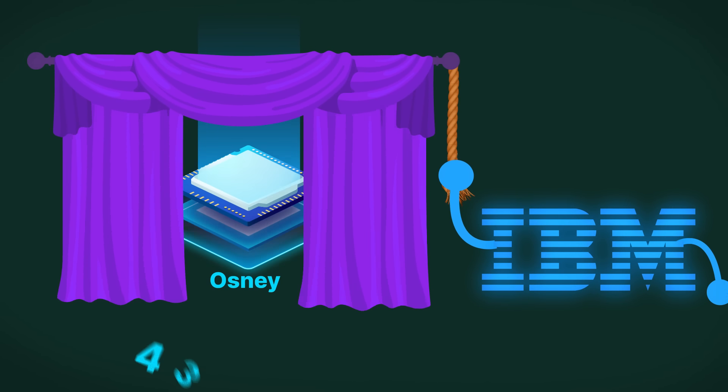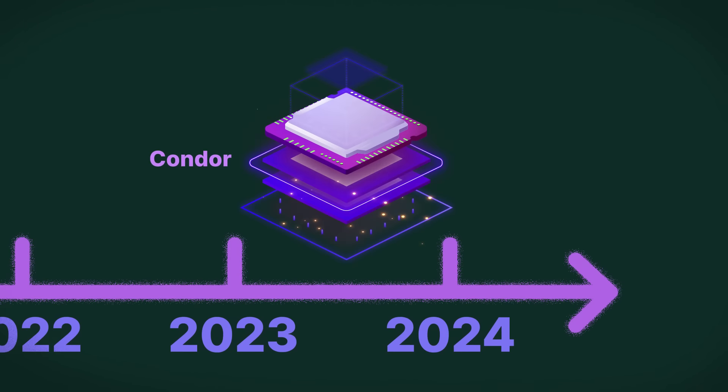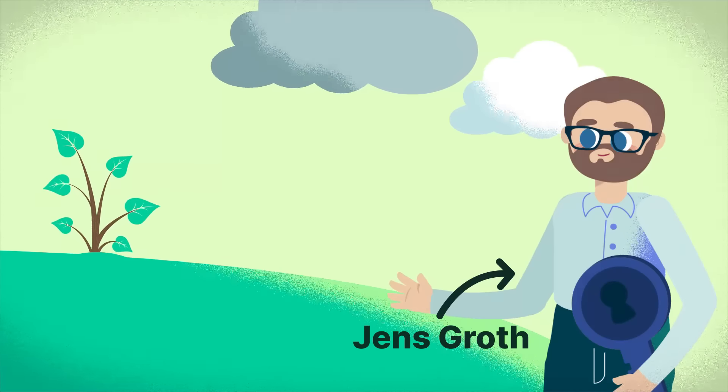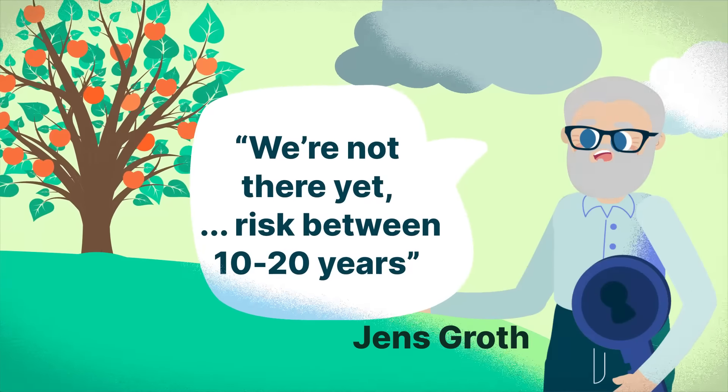IBM unveiled a 433 qubit processor just recently, while a 1,000 qubit beast is set to debut by 2023's end. According to cryptography expert Jens Groth, blockchains might only be at risk within the next 10 to 20 years.